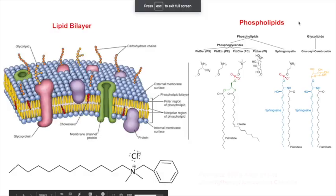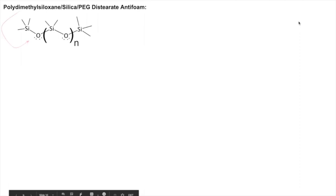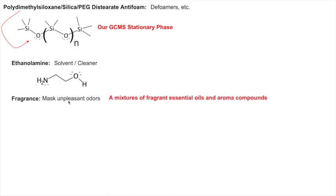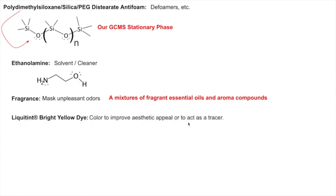Formula 409 also contains anti-foam components: polydimethylsiloxane (PDMS — the same material as our GC-MS stationary phase), polyethylene glycol distearates, and silica. These defoamers prevent excessive foaming when sprayed. There's also ethanolamine as a common polar solvent and cleaner, fragrances to mask unpleasant odors (a mixture of essential oils and aroma compounds), and a bright yellow dye to improve aesthetic appeal.